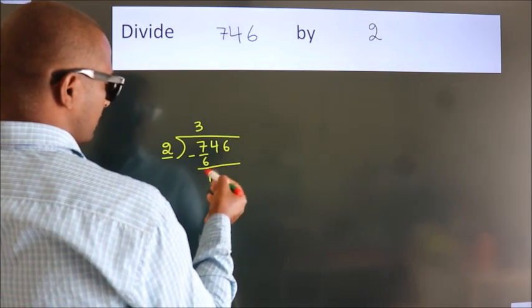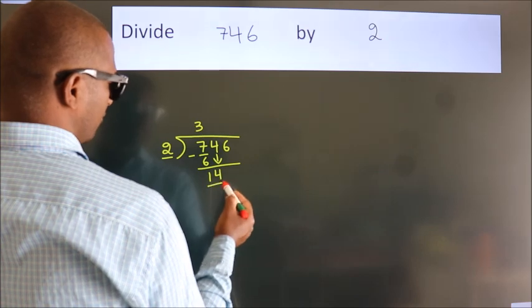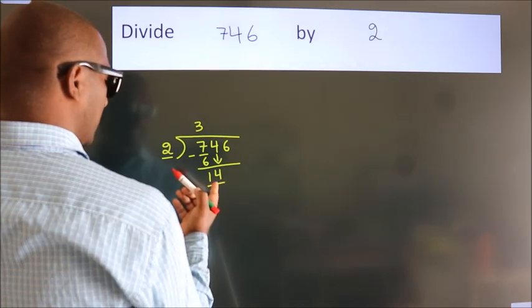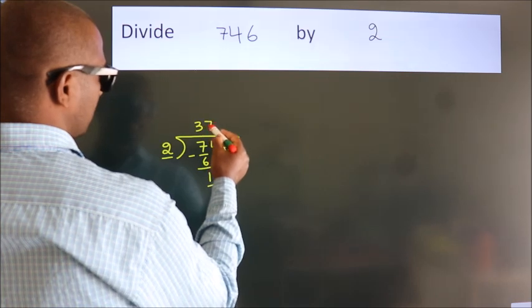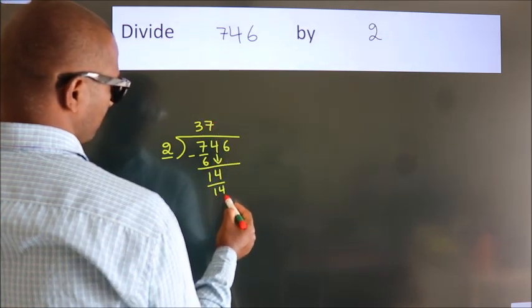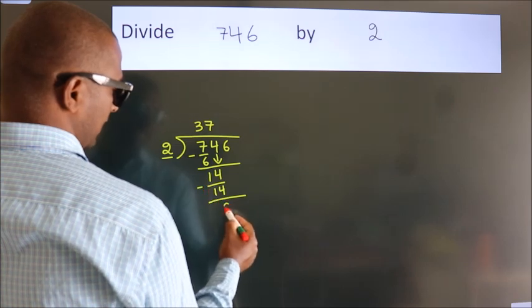After this, bring down the beside number. So 4 down. So 14. When do we get 14 in 2 table? 2 sevens, 14. Now we subtract. We get 0.